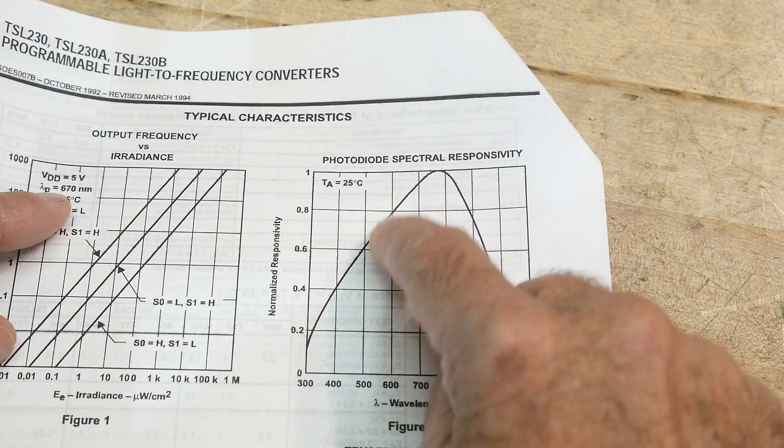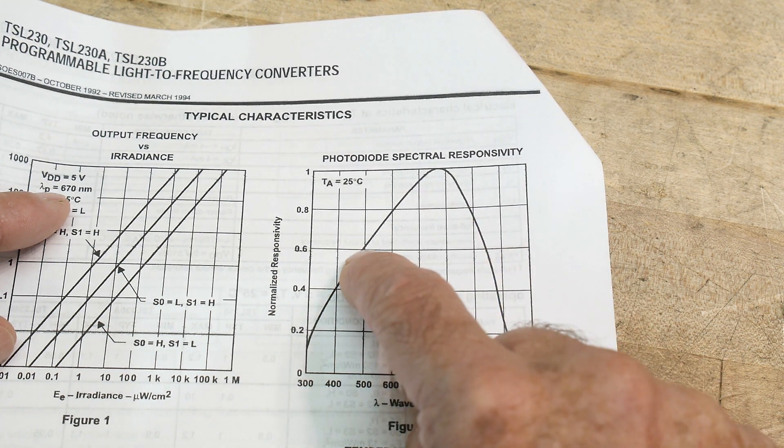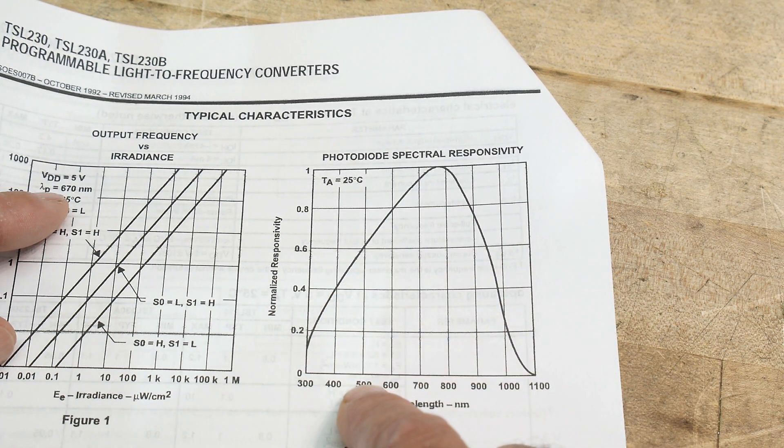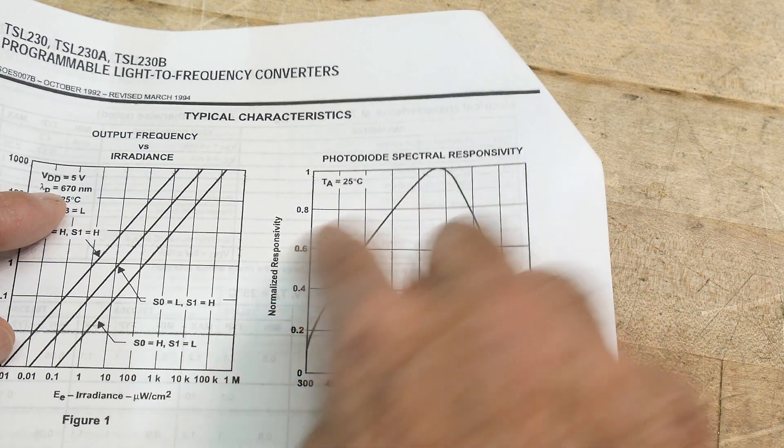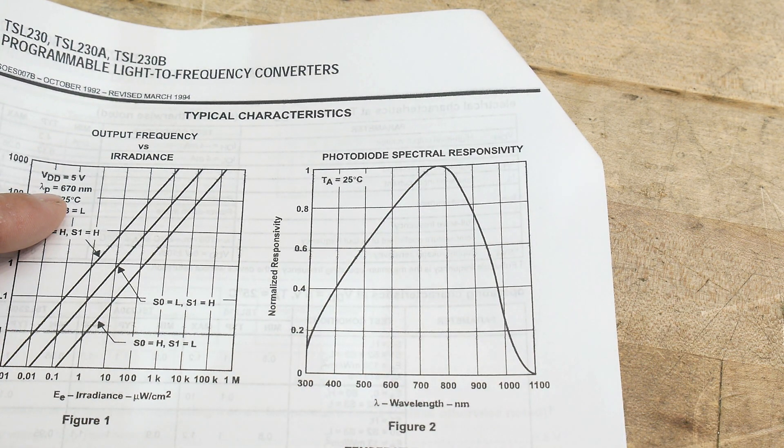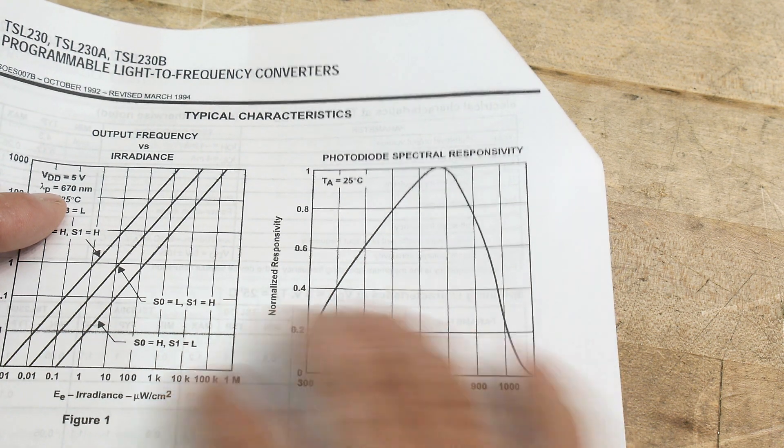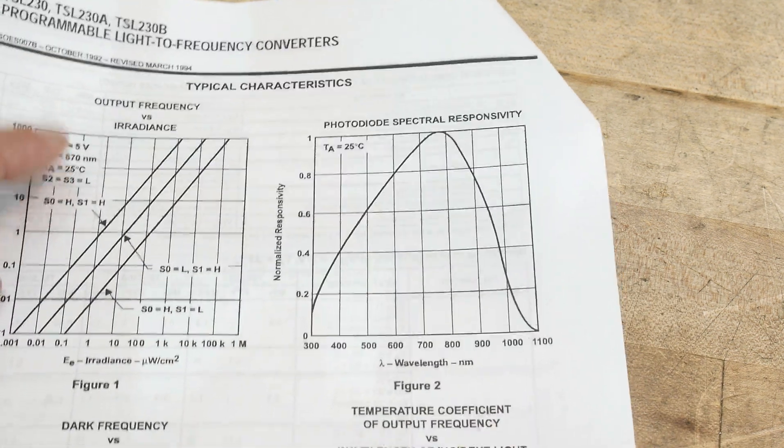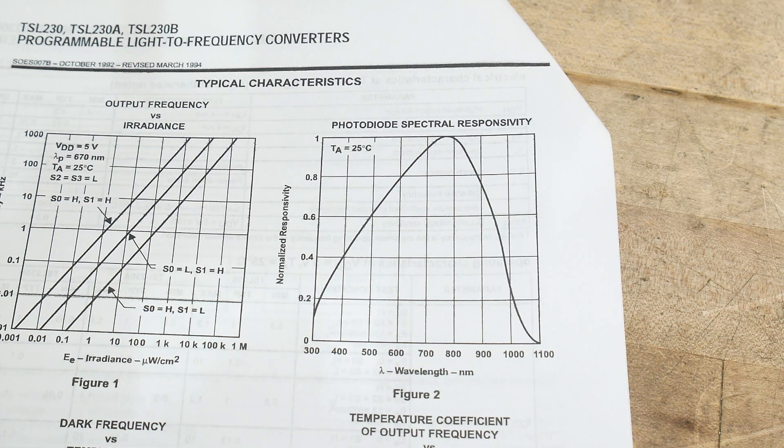And it'll be 20% down at 600 and 40% down at 500. So yeah, it's not equally, the conversion of light to photons is not equal in silicon. Okay yeah, let's take a look at the circuit.